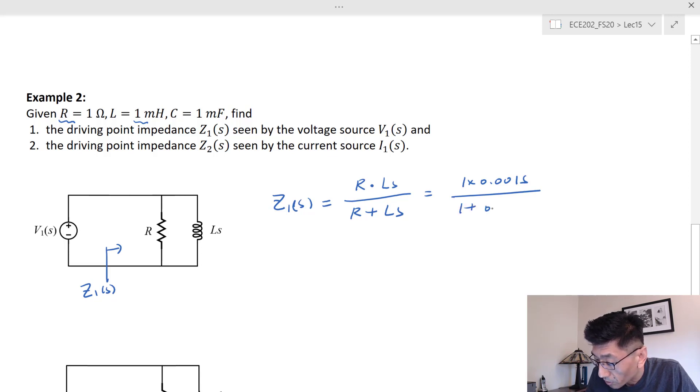1 plus 0.001s, which is equal to s over s plus one thousand. Or you can use the parallel admittance approach.